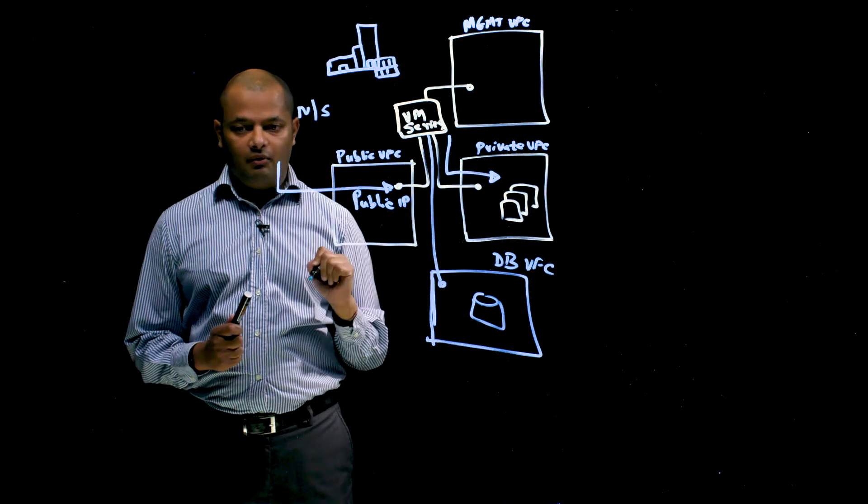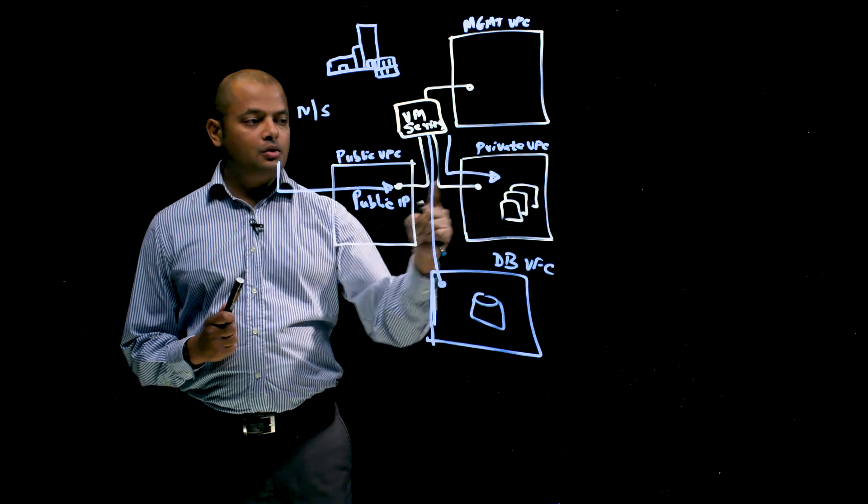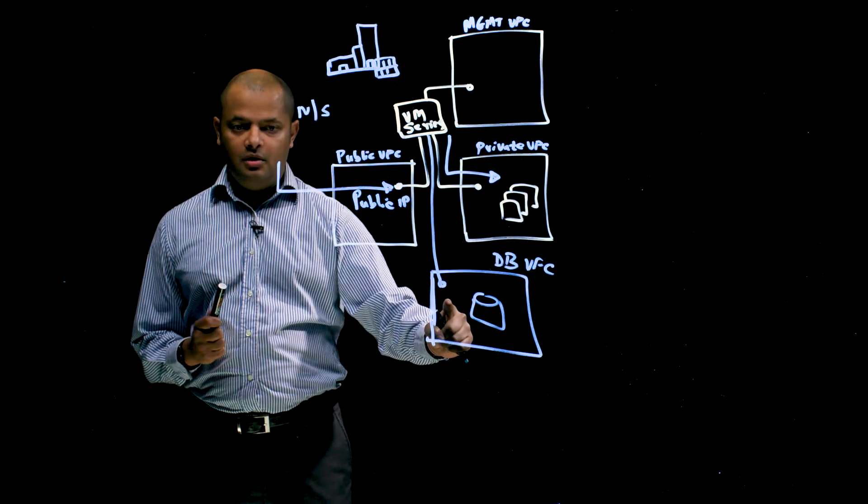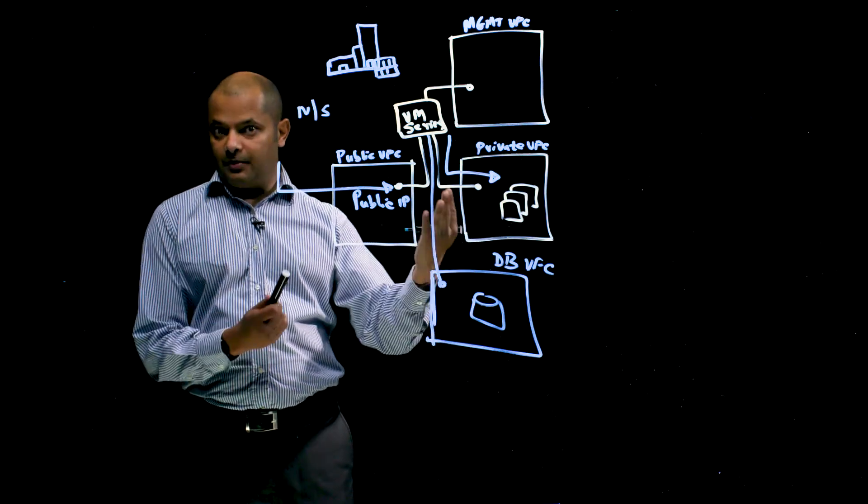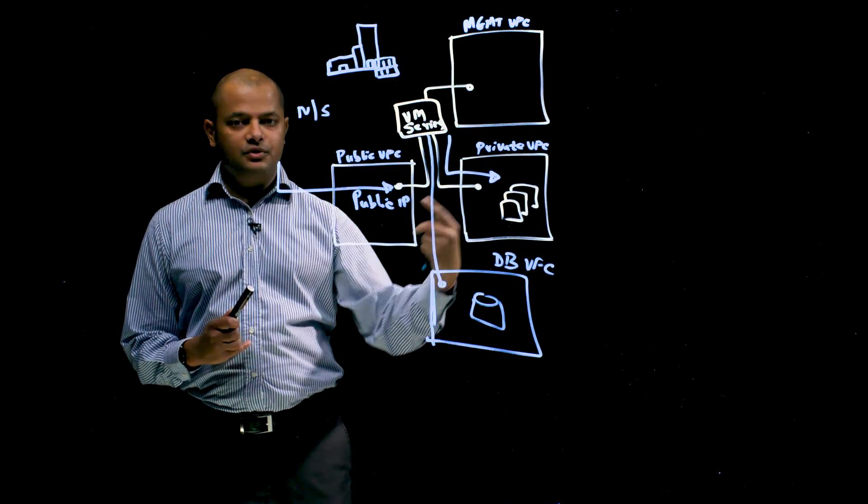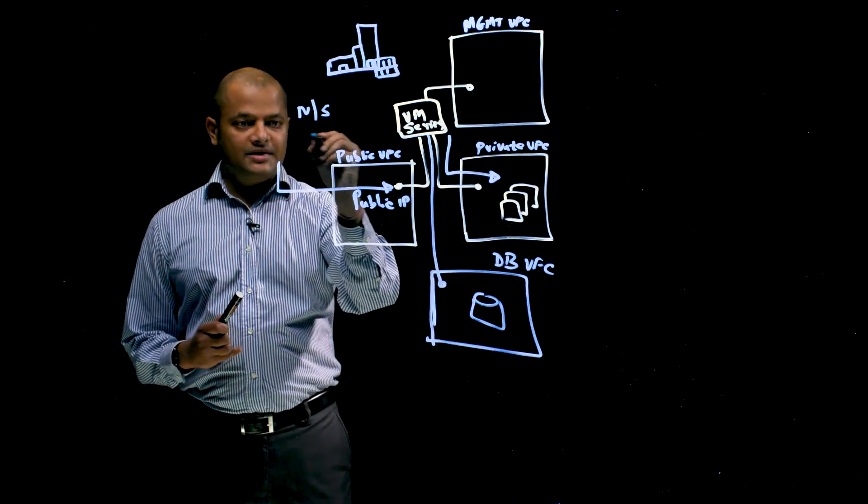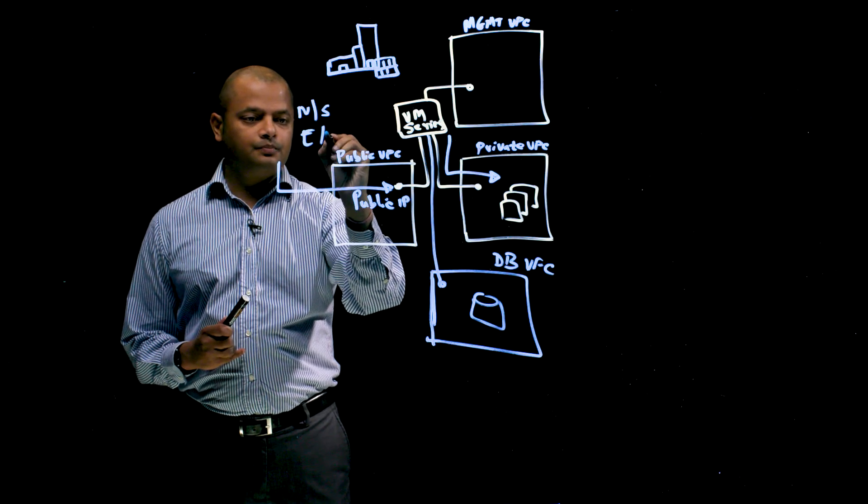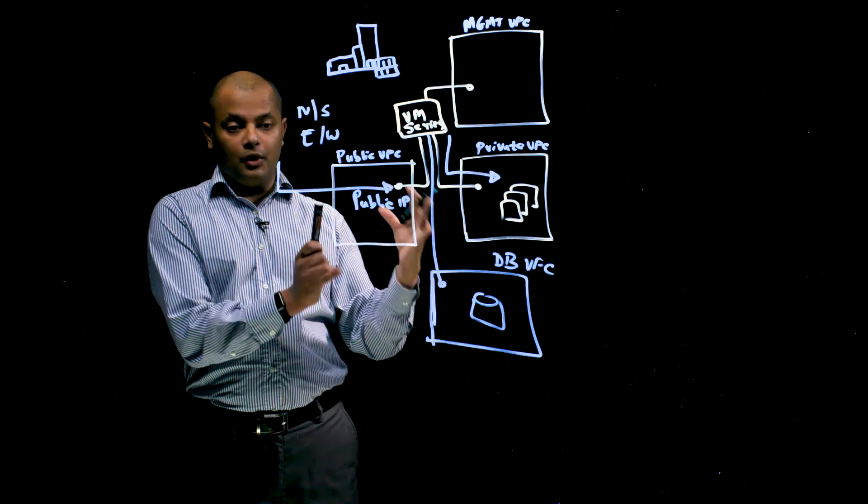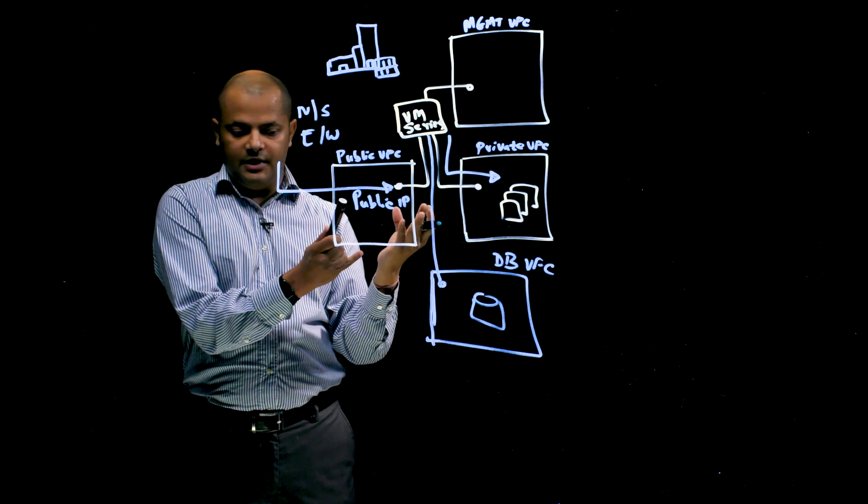And then you would configure firewall policies in VM series to ensure that, let's say, the web tier can talk to the database tier, but only over MySQL. So that's a typical app ID-based policy that you would configure in the firewall. And so this gives you that full control north-south and east-west. And so this deployment allows both those capabilities with full next-gen firewall capabilities.